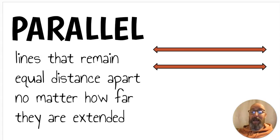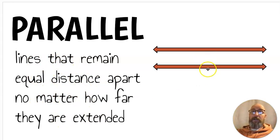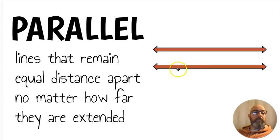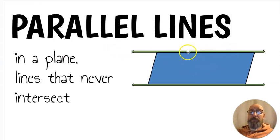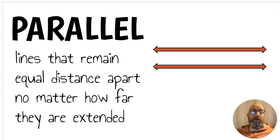Next we have parallel. Parallel lines are lines that remain equal distance apart no matter how far they are extended. Here I have two lines going in opposite directions, and they're never going to touch no matter how far they are extended. Parallel lines in a plane are lines that never intersect — I have a shape here and those lines will never touch, so those are parallel lines.